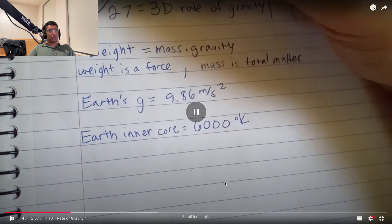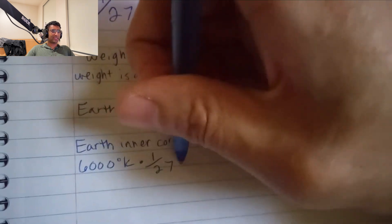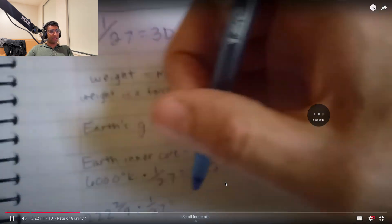So he's using this magical rate, 1 over 27, and coupling it with the Earth's inner core to supposedly prove the rate of gravity and using 1 over 27 as that number. So let's just watch this beautiful calculation, I guess. We can skip ahead a little bit.